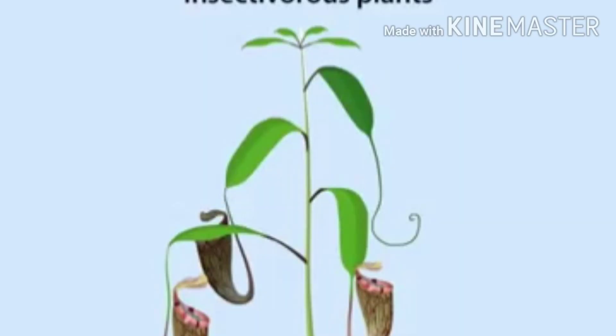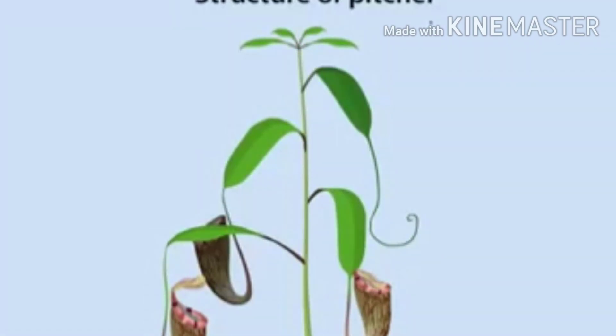The next group of heterotrophs are called the insectivorous plants. In the picture you can see Nepenthes, or the pitcher plant, which is an insectivorous plant. Insectivorous plants are those plants which eat insects.